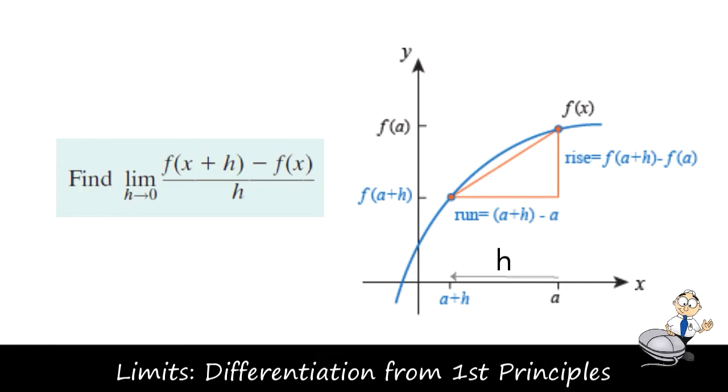So we're going to work out what f of x plus h is. We're going to subtract f of x from this, that's the original function. Then we're going to divide this by h, and then we're going to let h equal to 0 to see what happens to the value of the function.